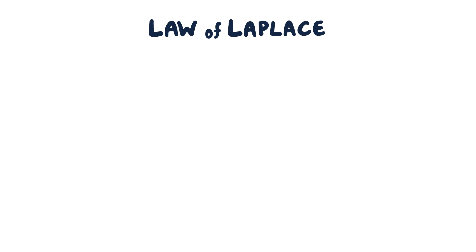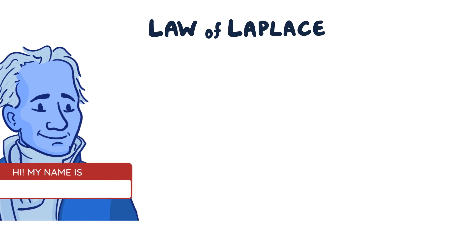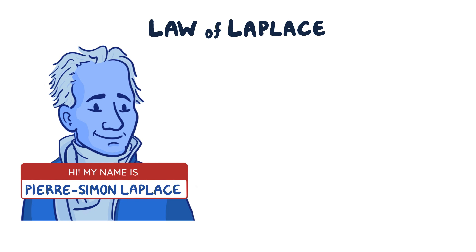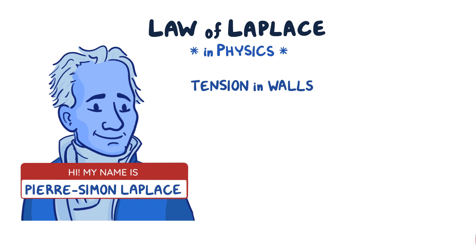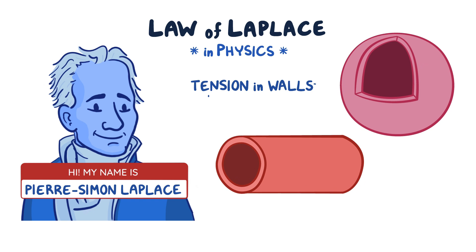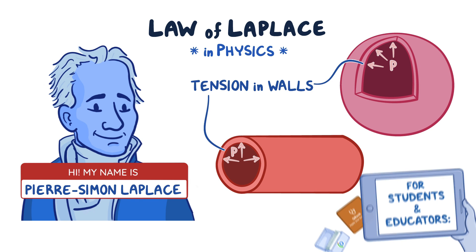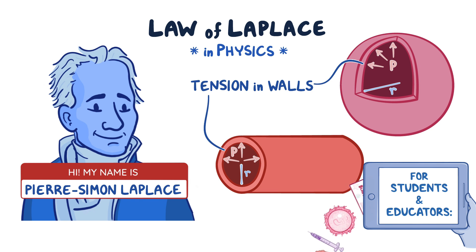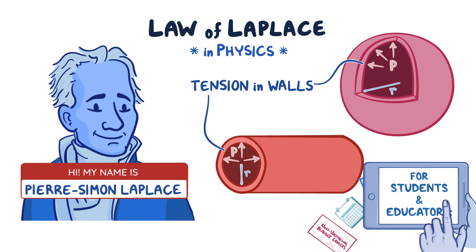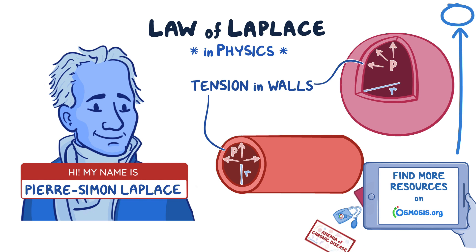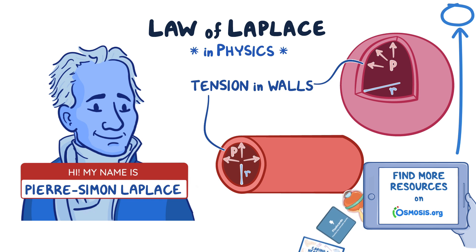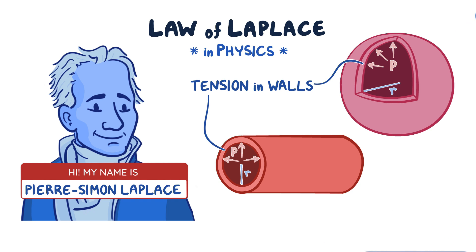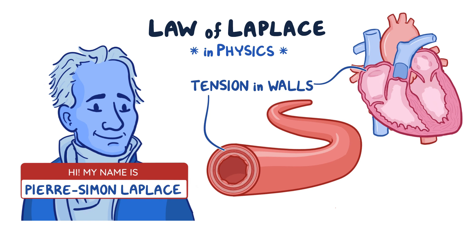The Law of Laplace, named in honor of French scholar Pierre-Simon Laplace, is a law in physics that states that the tension in the walls of a hollow sphere or cylinder is dependent on the pressure of its contents and its radius. The concept was later applied to medicine, since there are many hollow spherical and cylindrical shaped organs in our bodies that deal with pressures. Important examples include the blood vessels and the chambers of the heart.